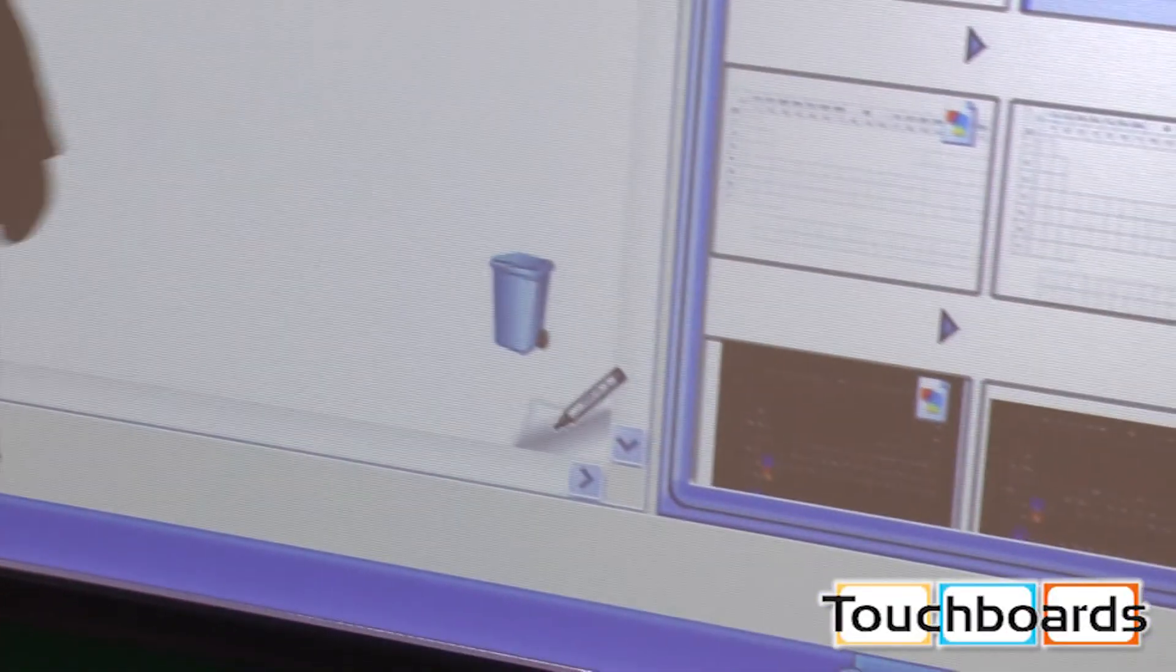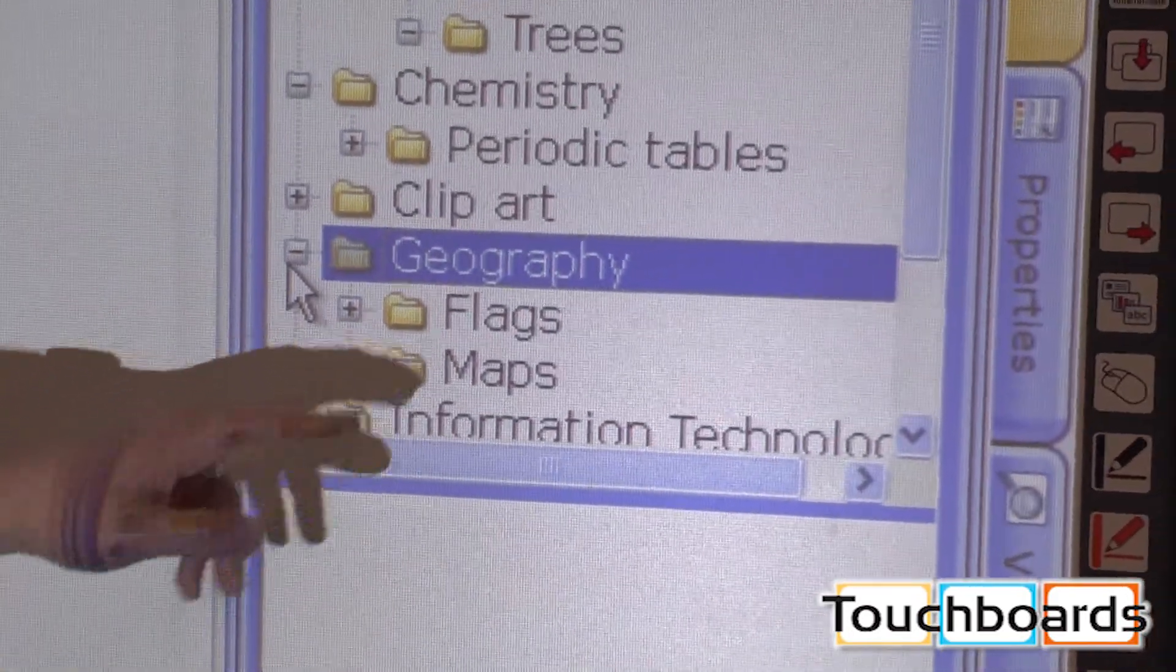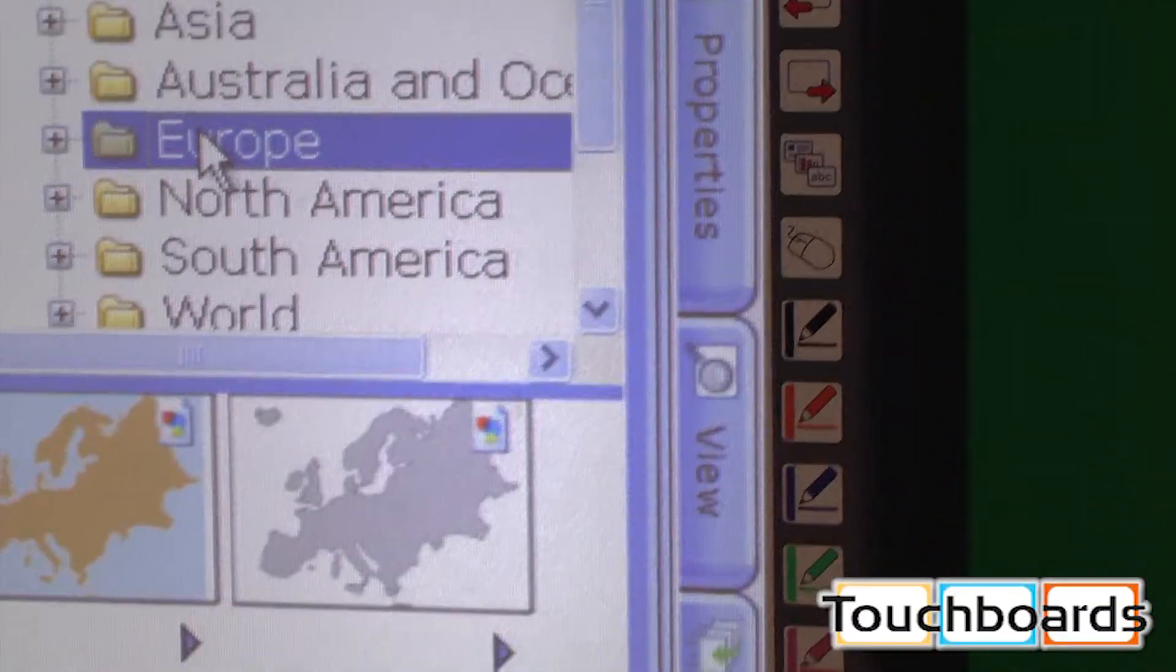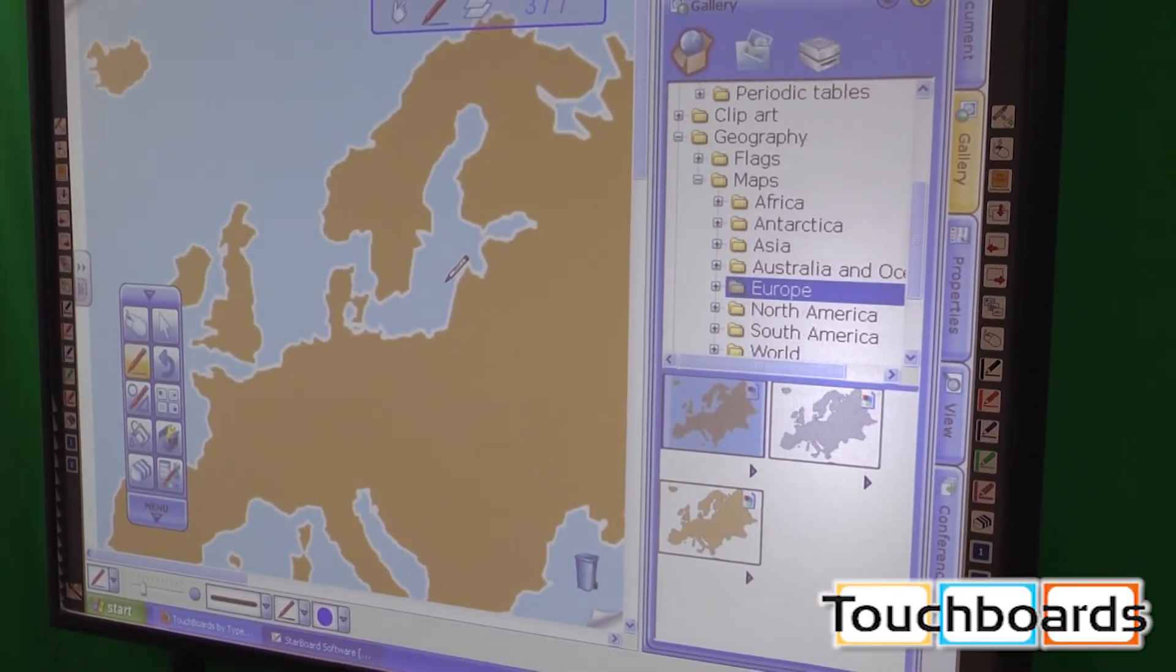Let's pull up a new one. We can go to geography. We've got maps here, we've got flags. We can pull up a map of Europe. We can drag that in here. Suddenly, look, we can now talk about a specific country.